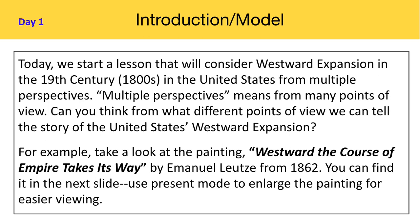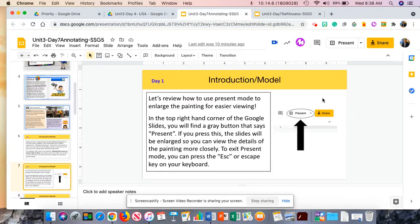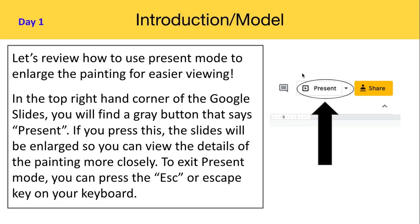You want to use present mode to enlarge the painting for easier viewing. In the top right-hand corner of the Google Slides, you will find a gray button that says present. If you press this, the slides will be enlarged so you can view the details of the painting more closely. To exit present mode, you can press the escape or ESC key on your keyboard. I'm going to exit out of my screen, which is currently in present mode, so you can see what a normal Google Slides view looks like. Then go up to the top right-hand corner and click present, and you'll see that the screen enlarges for a clearer view.